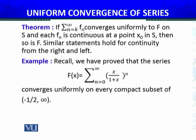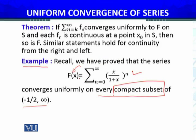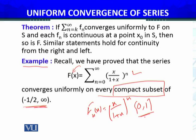Let's consider some examples. Recall we have proved that this series converges uniformly on any compact subset of a given set. Suppose this series converges to some f(x). Now for fn(x) = x / (1 + xⁿ), on any compact subset — for example the closed interval [0,1], which is a compact subset — all functions f1, f2, and so on are continuous on that set.